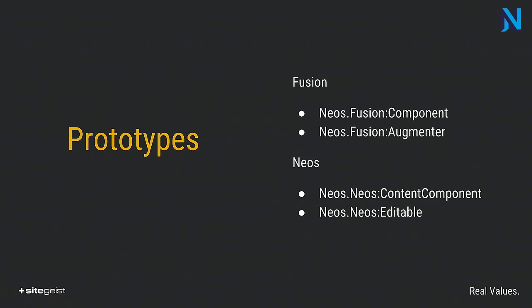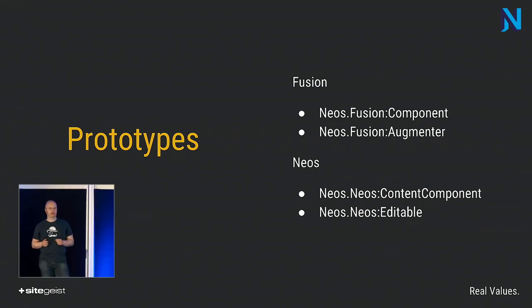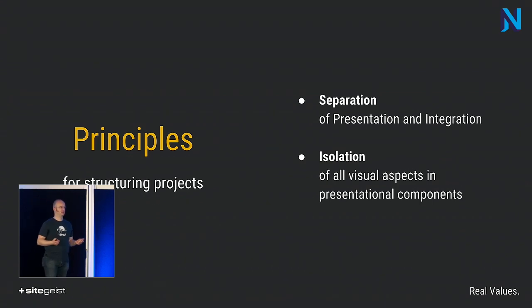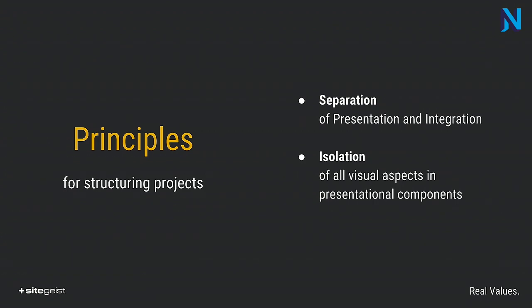Those prototypes were in an extended package back then, but right now they are in the Fusion core or in the Neos core — they are official now. You can still use the package factory Atomic Fusion, but you don't have to anymore. The two most important principles are a strict separation of rendering — what we call presentation — from the integration side, which is responsible for fetching data, while the presentation side handles all markup, styles, and defines an API in between.